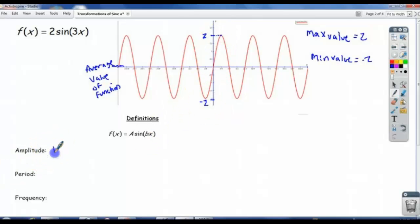So we're going to write that the amplitude is the distance from the average value. By the way, the average value of the function in this case is equal to 0 because y equals 0.